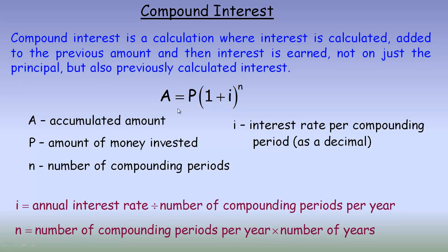The formula is A equals P times 1 plus i to the n. A is the accumulated amount — the amount the investment is worth at a certain point in time after a certain amount of interest has been calculated and added in. P is the original principal, or the amount of money invested.